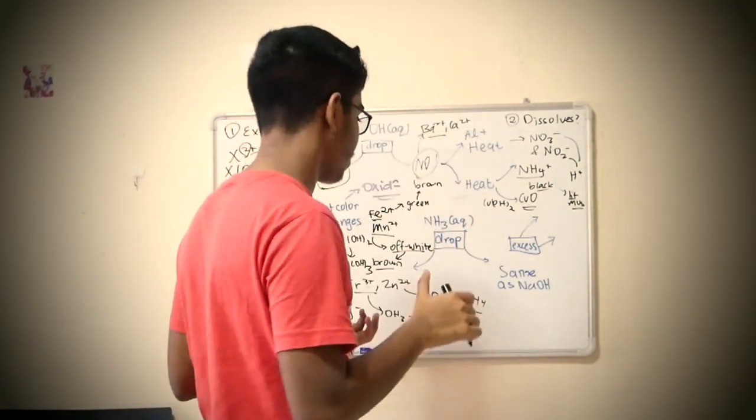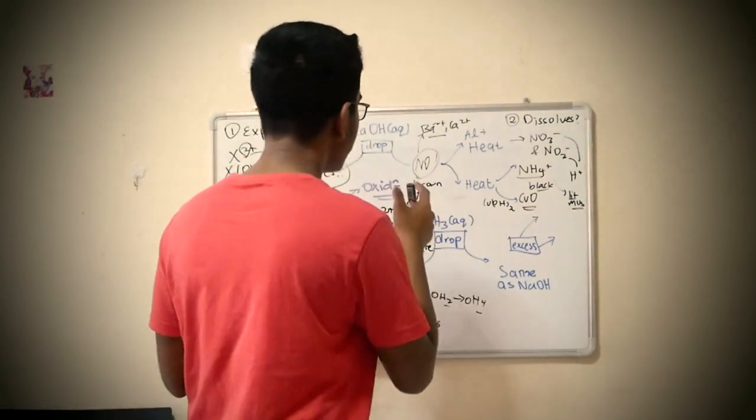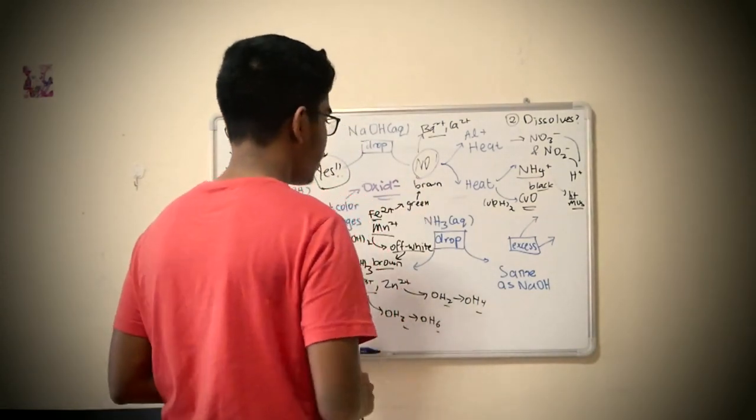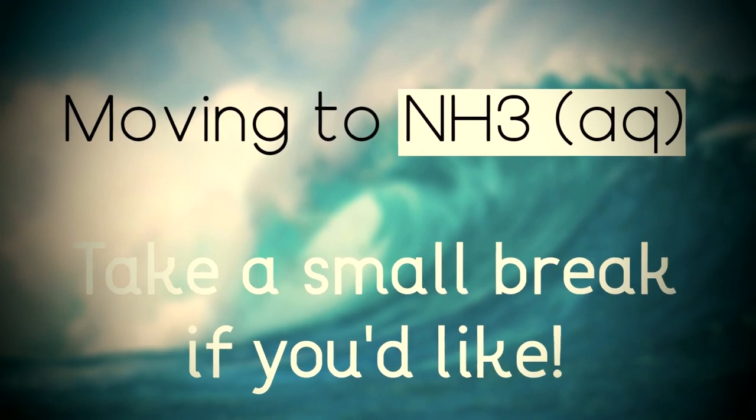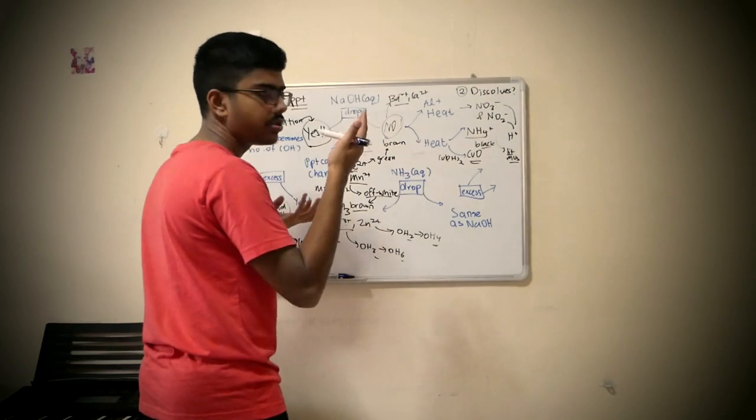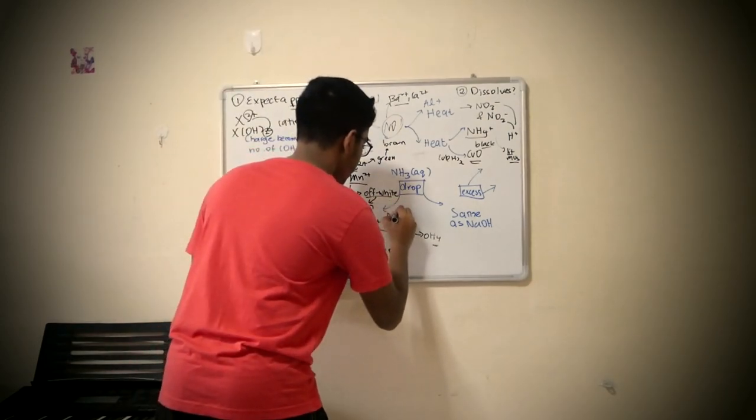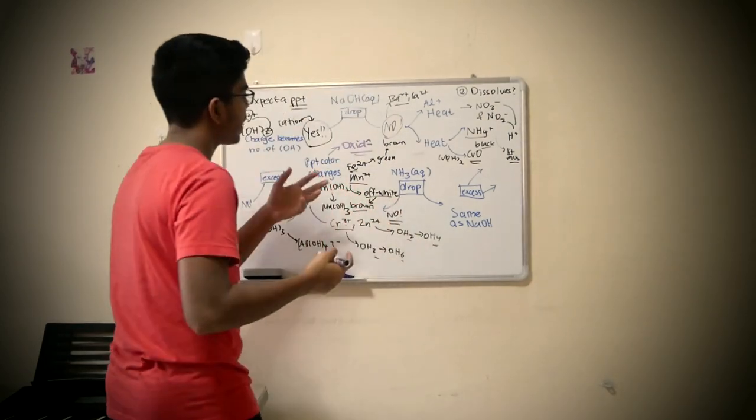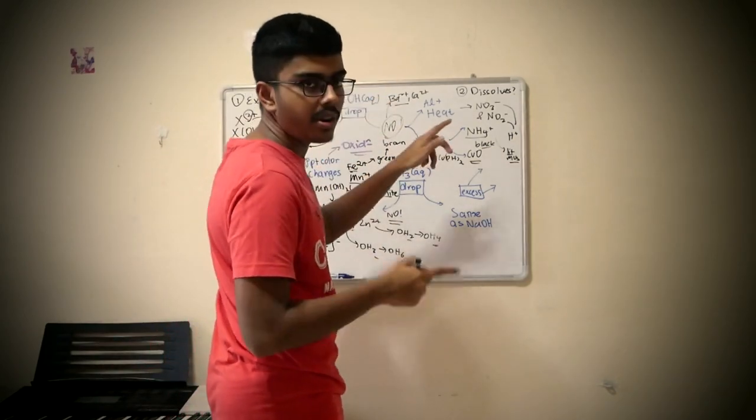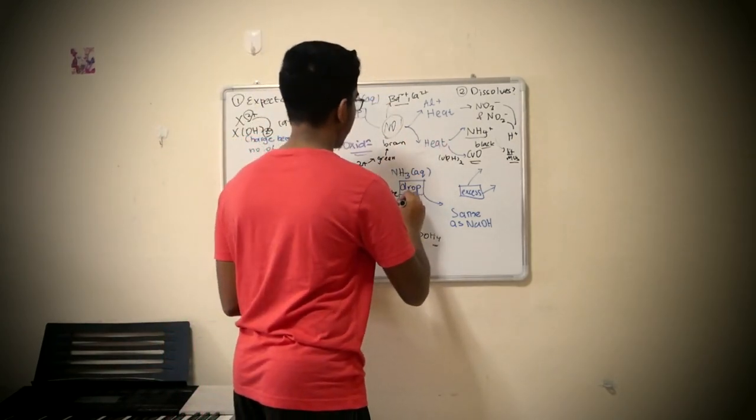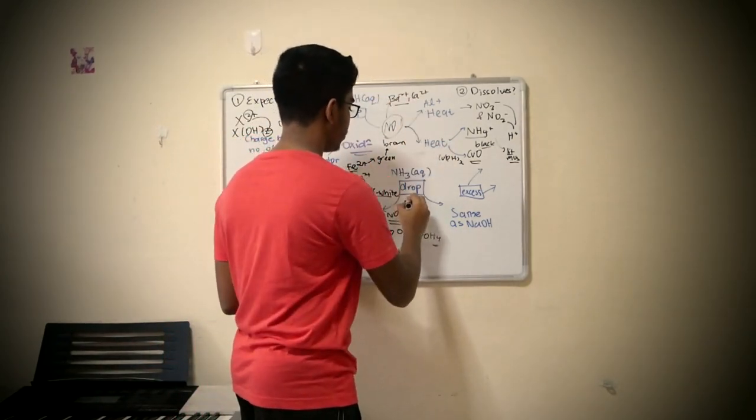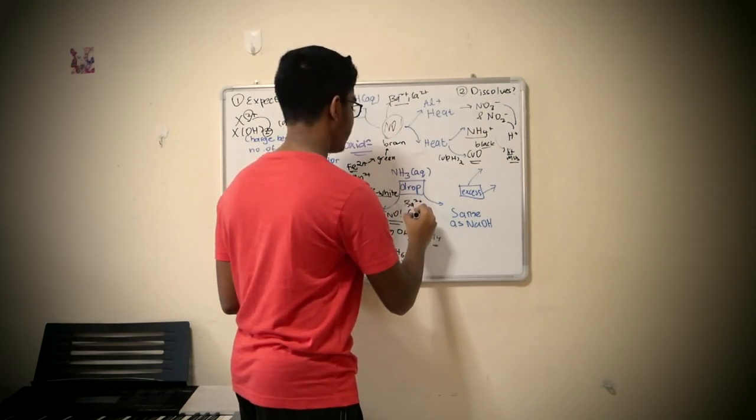So we are going to go to the next one. Take a small break if you'd like to NH3 aqueous. Now when you're adding drop-wise, if there is no precipitate which is the first case, it's back to the same thing. It's barium or calcium. So it's back to the same thing, Ba2+, Ca2+. It's pretty similar in fact. Both of them are almost the same.